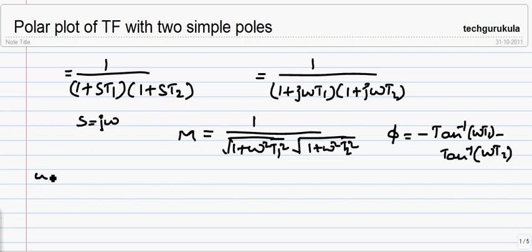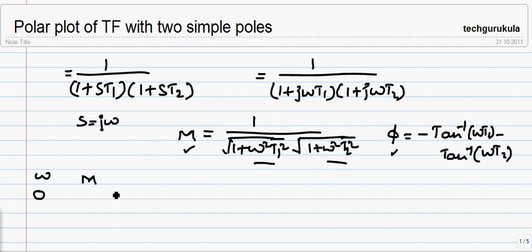For the polar plot, we vary ω from 0 to infinity and plot the magnitude M on the complex plane with the corresponding phase angle. When ω equals 0, the magnitude M equals 1, because both terms in the denominator become 1, and the phase angle becomes 0.